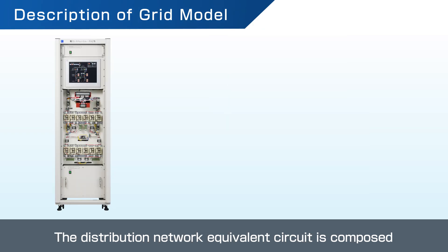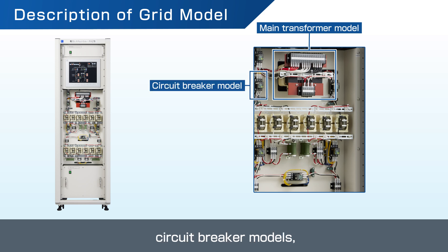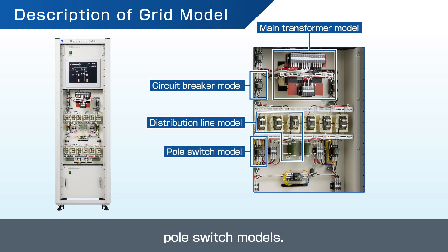The distribution network equivalent circuit is composed of a three-phase transformer model, circuit breaker models, distribution line models, and pole switch models.